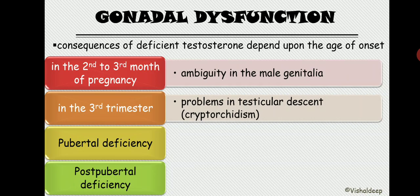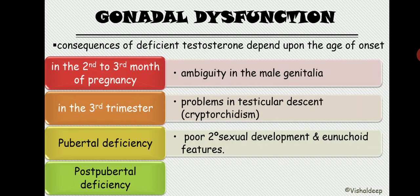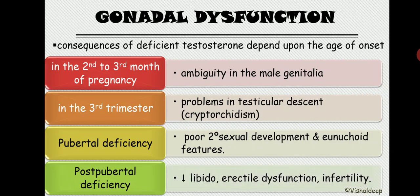Eunuchoid features mean reduced or intermediate sexual characteristics. If testosterone deficiency occurs after puberty, secondary sexual characters are already present but there is loss of libido, erectile dysfunction, and infertility. Cryptorchidism means testis fails to descend from the abdomen into the scrotum through the inguinal canal, exposing the testis to higher core temperature and reducing or abolishing spermatogenesis.